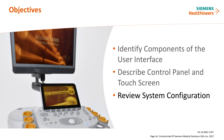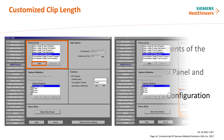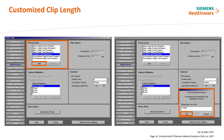There are application-specific settings within system configuration that can be altered if the standard settings differ from the needs of the installation site. Should a required clip capture length not already be preset, a customized clip capture length can be added to the system.